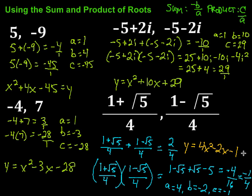As we're doing these, we can always check by graphing and looking for those x-intercepts where the graph crosses the x-axis. So using the sum and product of roots: if we know the roots, we find the sum which equals negative B over A, and the product which equals C over A. Once we pick out A, B, and C, we can write our quadratic equation. Hope this video was helpful — keep working hard on your math!